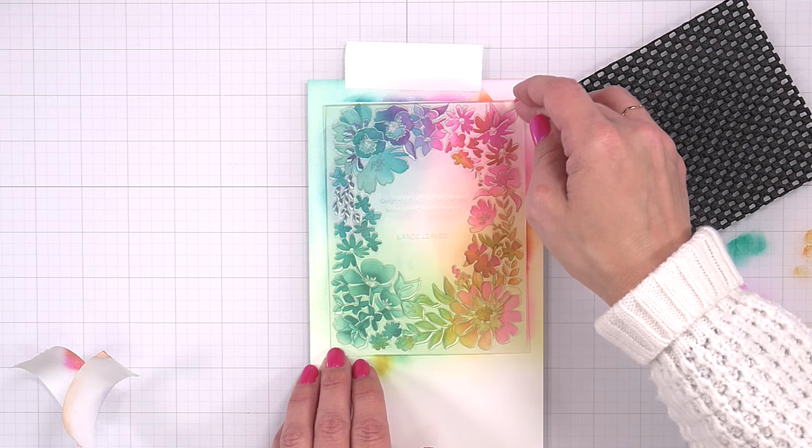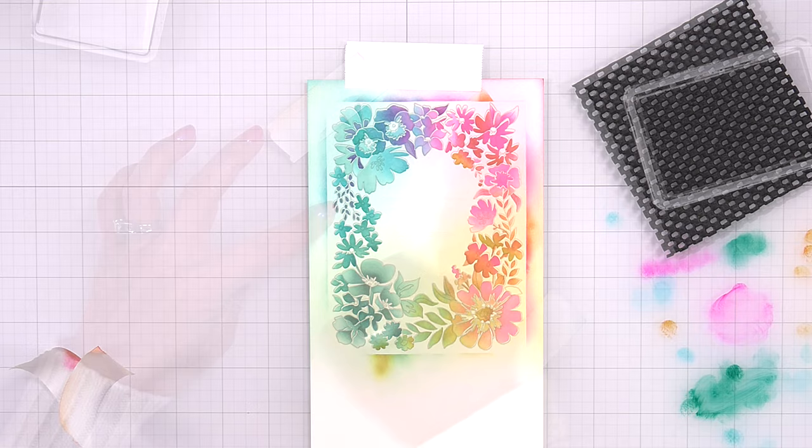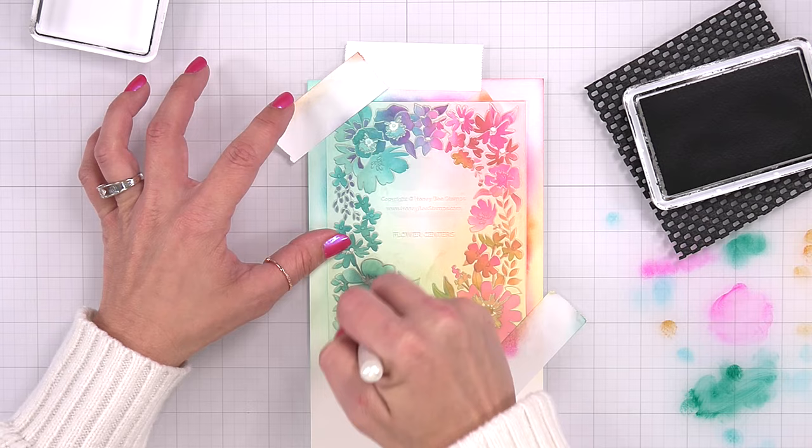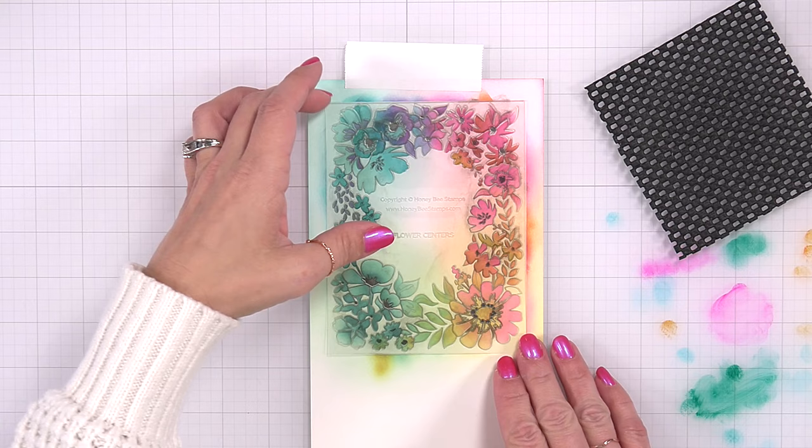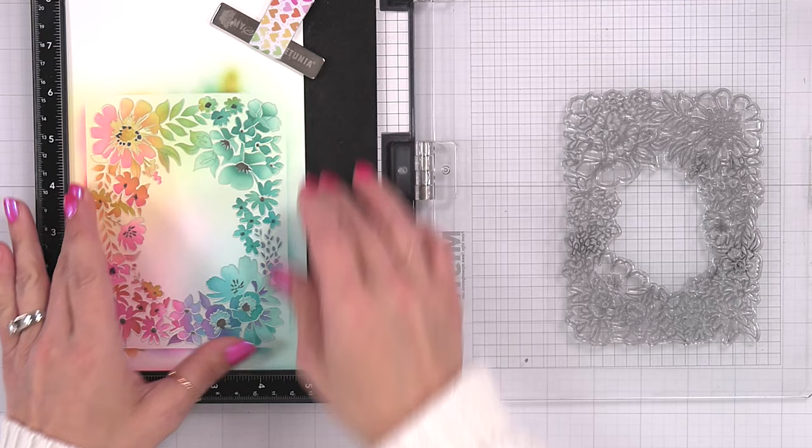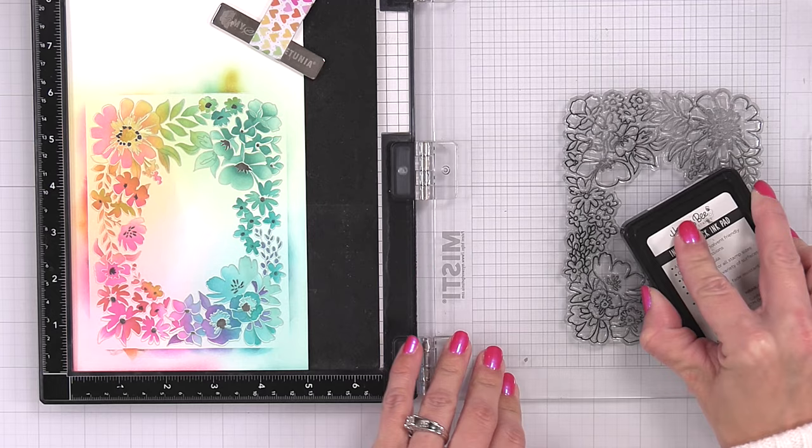Now the very last layer of the stencil is going to be adding in the centers of the flower. For this one, I am bringing in a black. You could also do maybe some gold paste, I think would look really pretty, but I wanted to do black, which is going to look weird at first. I know this is kind of odd, but it is all going to tie together once I re-stamp my image.